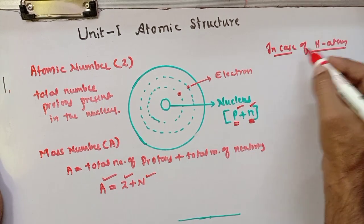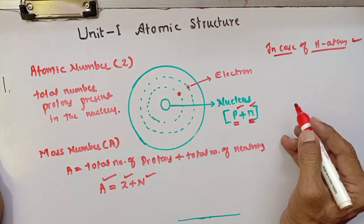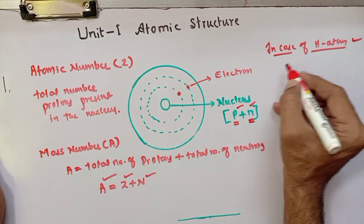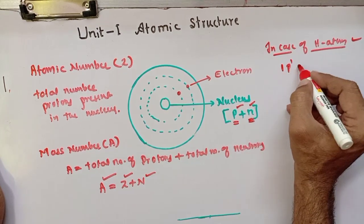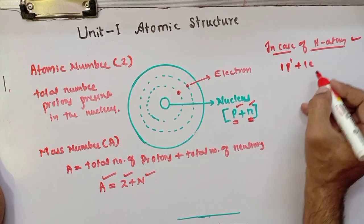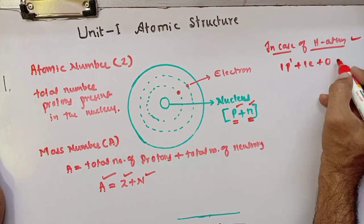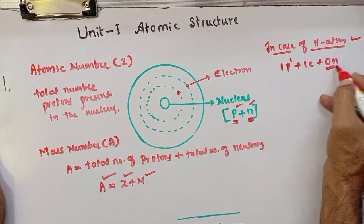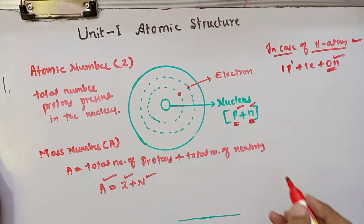In case of the hydrogen atom, it is very clear that the hydrogen atom contains one proton and one electron and zero neutrons — that means hydrogen atom does not contain neutrons.